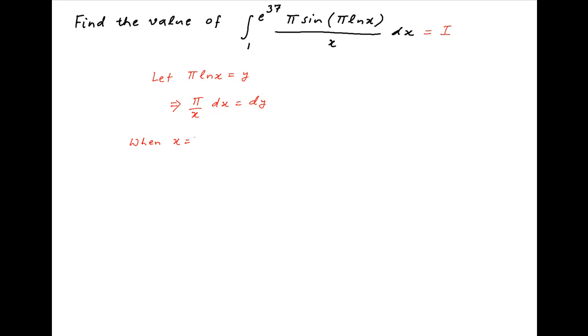Now when x is equal to 1, y is equal to pi times ln 1. ln 1 is equal to 0, therefore the value of y is 0 when x is equal to 1.